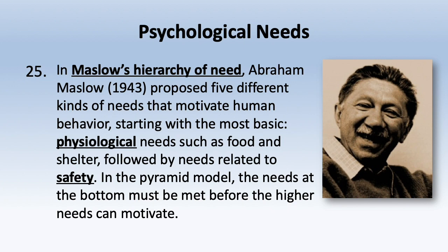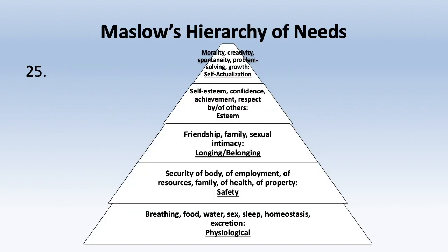Maslow proposed five kinds of needs that motivate human behavior. The most fundamental is physiological needs — food, shelter, water, sex, sleep, homeostasis, and excretion, all essential for physical survival. The next level is safety — security of body, employment, resources, family, health, and property. If you live in a community with crime, you'll be more focused on safety than other things.